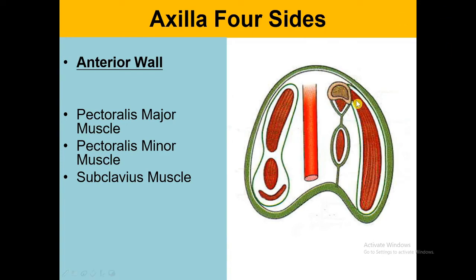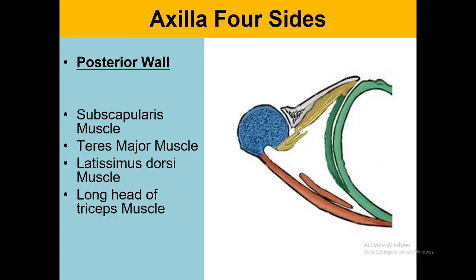From the lateral view we can see the pectoralis major muscle, pectoralis minor muscle, and subclavius muscle. The green boundary around the muscles represents the clavipectoral fascia, and there is also the suspensory ligament. The posterior wall of the axilla is represented in this diagram in yellow.